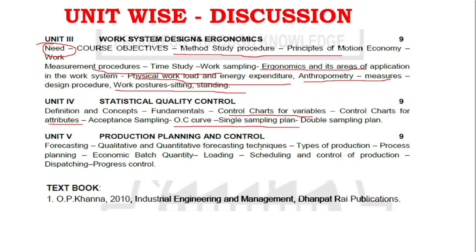For unit five: process planning and economic batch quantity are important end-of-concept topics. Scheduling and control of production is also a key question area. The subject is complete theory overall, and unit five and unit three have a lot of choice in split-up questions. That's why I emphasize choice — and the textbook alone is more than enough to cover the full syllabus.